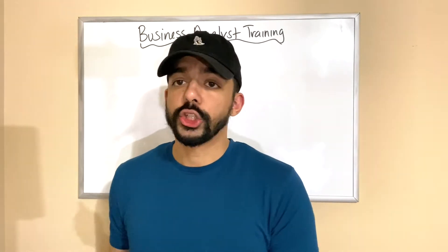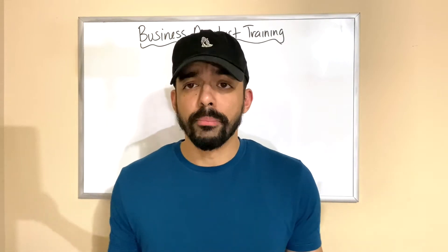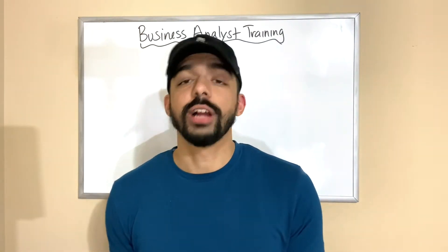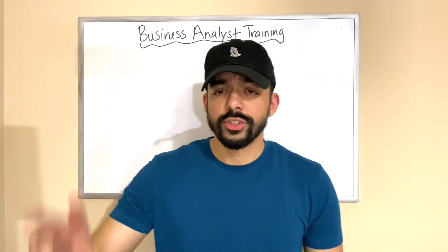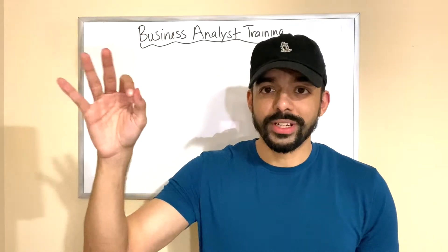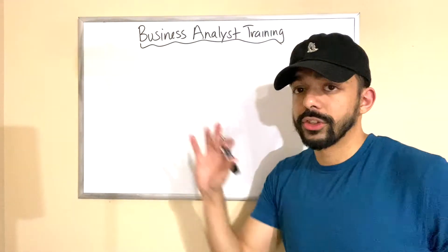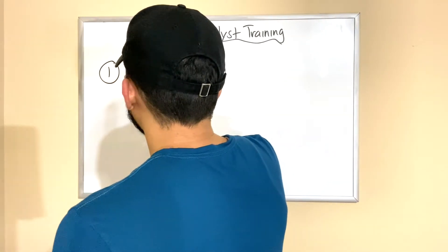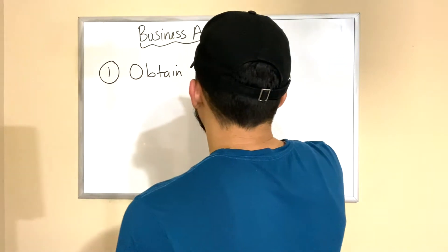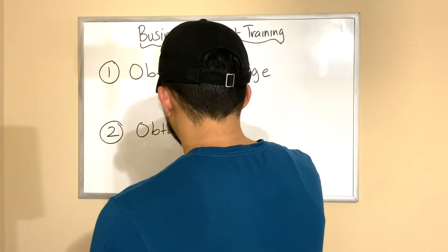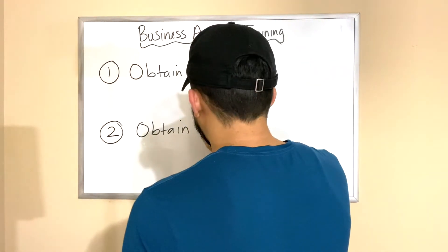Here's the thing: if you want to get trained completely as a business analyst, there are so many components that we'd be here for hours. So it's not going to be possible to cover all of that, but what is important is knowing the steps to take. We're going to cover two main steps, broken down into three sub-steps each, for a total of six steps. Number one: obtain knowledge. Number two: obtain experience.